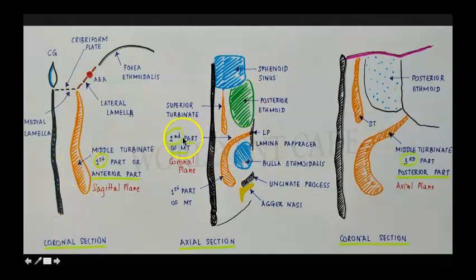The second part of middle turbinate is present in a coronal plane. It is attaching to the lamina papyracea. The first part is attaching at the junction of medial and lateral lamella of cribriform plate and a small attachment to the frontonasal process of maxilla.